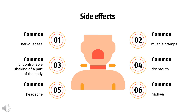Side effects of Formoterol include: nervousness, headache, uncontrollable shaking of a part of the body, dry mouth, muscle cramps, nausea, vomiting, and diarrhea.